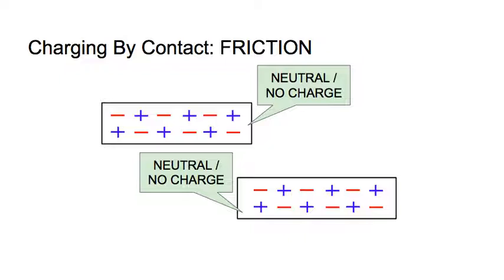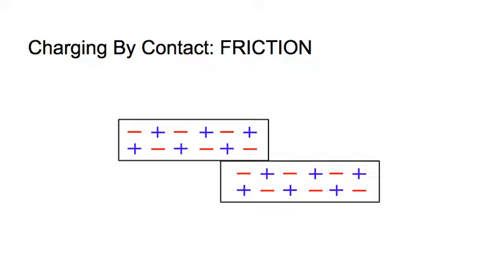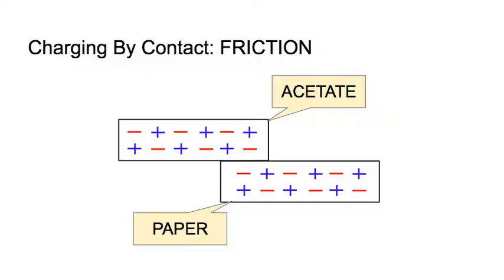Now when we bring these two substances together and they meet or touch like so, we're going to call these two substances, just for this example, one's going to be acetate and one's going to be paper.